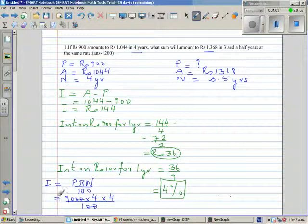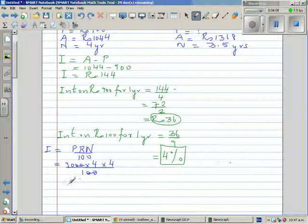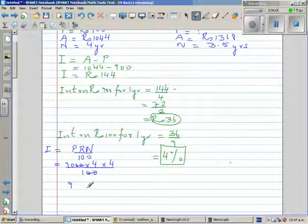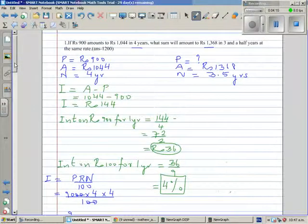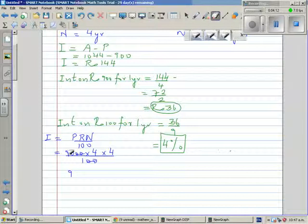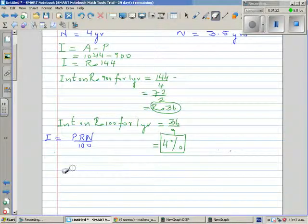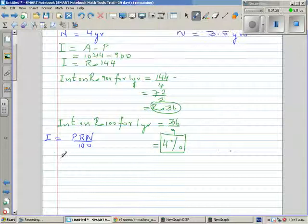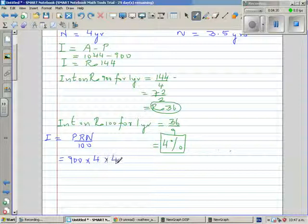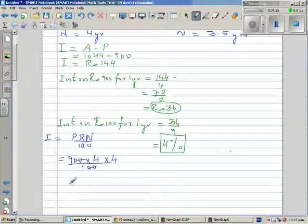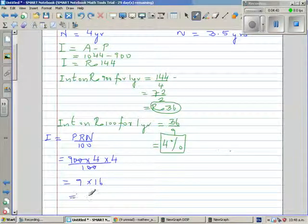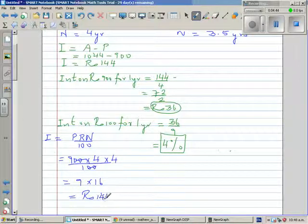So this is 900, okay. So this is 900, not 9,000. Sorry, it's not 9,000. So let me do it properly to confirm whether the answer we got is right or wrong. So this is 900 times rate is 4, and number of years is also 4, divided by 100. Which is 9 times 16, which is 144. Okay, so answer is right. 144.